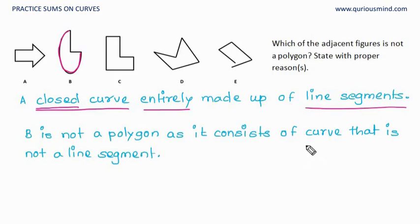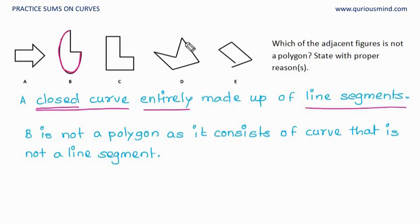B is not a polygon because it consists of a curve that is not a line segment. What about C? It is a closed curve, and yes, it is entirely made up of line segments. D? Yes, all of these are line segments. It's closed, and it can be drawn without lifting the pencil — that means it is a curve. So D is a polygon.